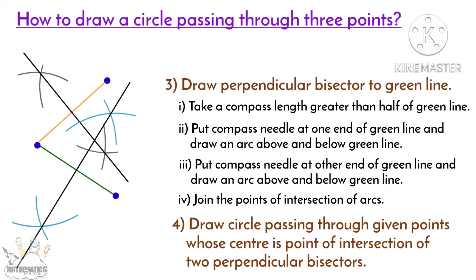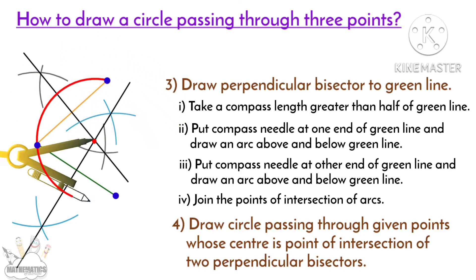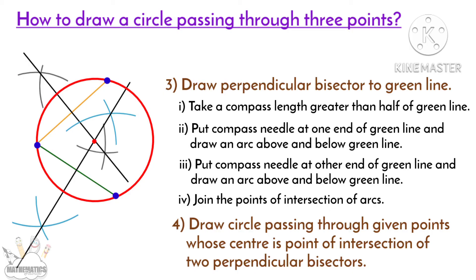The perpendicular bisector of the orange line and the perpendicular bisector of the green line meet at this point, and this point is the center of the circle passing through the given three points.